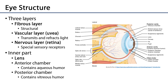The eye can be thought of as a structure consisting of three layers surrounding an inner part. The three layers, or sometimes tunics as they're called, are: the fibrous layer, which is the outermost layer providing structural support; the vascular layer or uvea, which is the middle layer that conducts vasculature and helps to transmit and refract light; and the inner nervous layer, also known as the retina, which contains the special sensory receptors for light that enable vision.